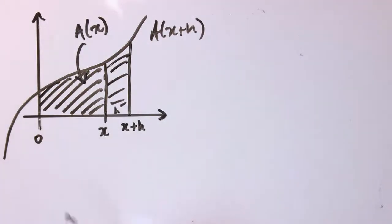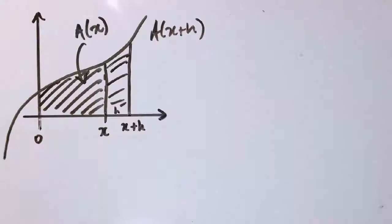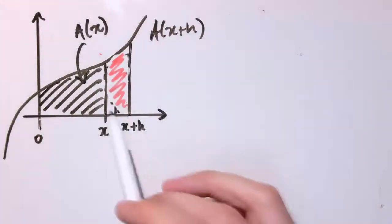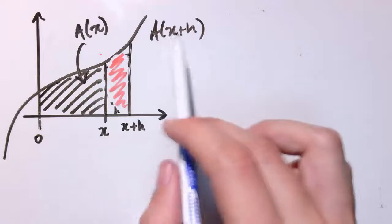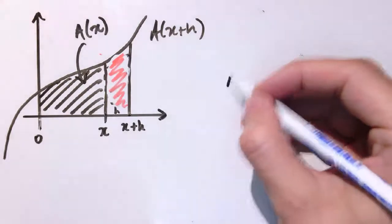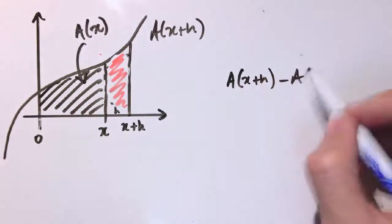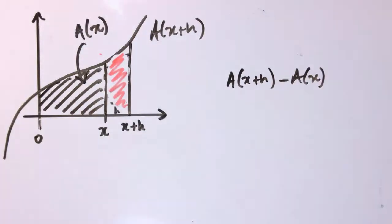And the crux of this proof is to look at this little extra area in here. We're going to look at it in two different ways. Firstly, this area in here, this red bit, it's the extra amount we get when we go up to x plus h instead of going up to x. So one way of writing this down is just to say that it's the area up to x plus h minus the area up to x. It's the difference between those two things.